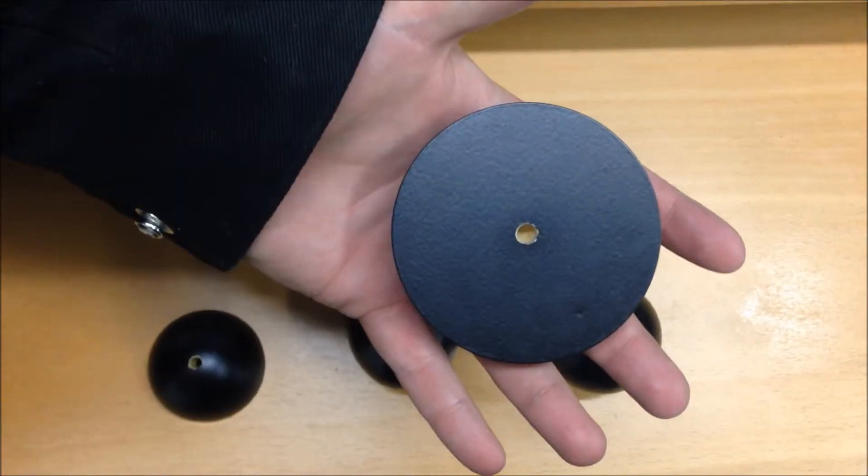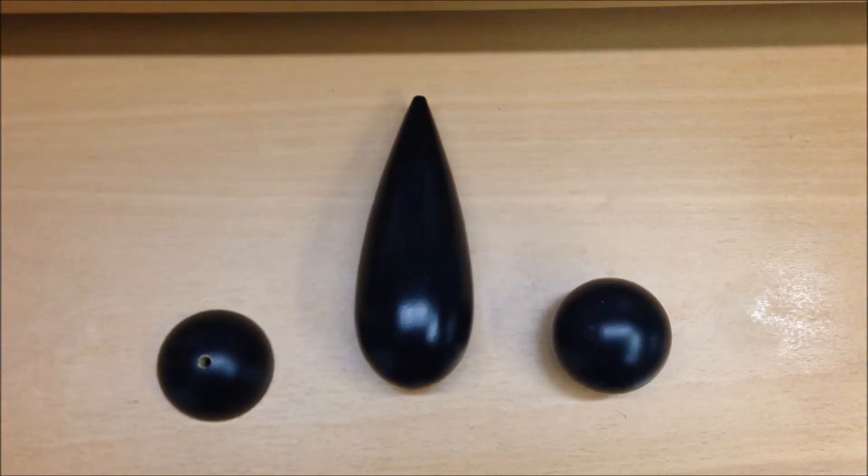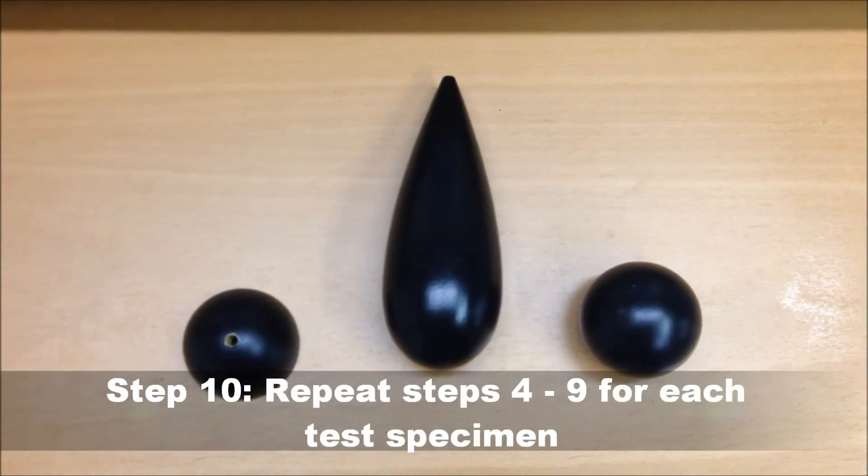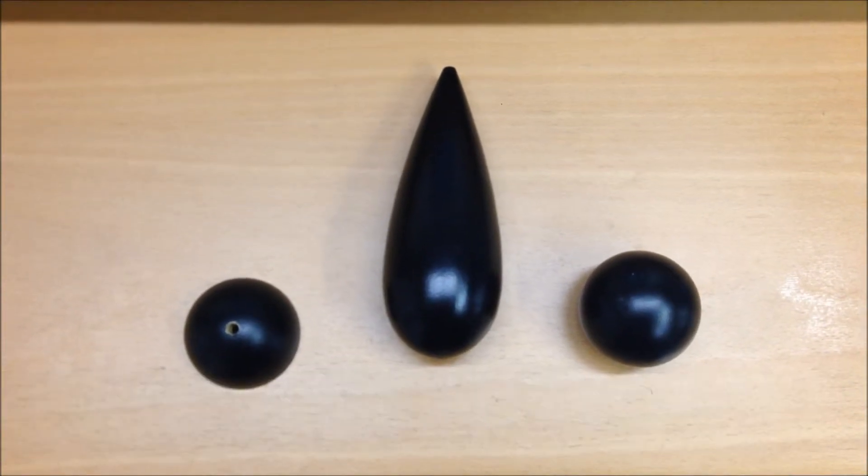Remove the circular disk from the wind tunnel. Then, replace with each individual test specimen and test it at various fan speeds.